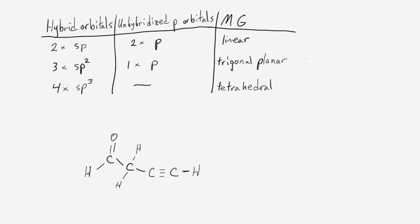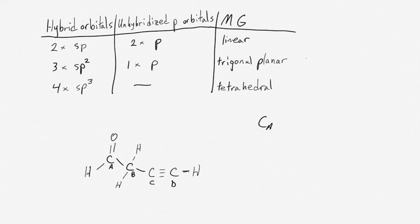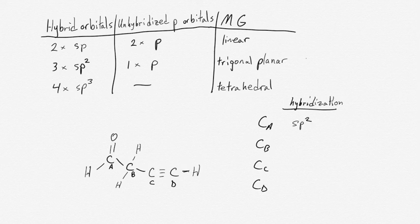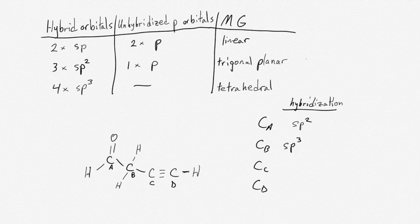We can also work out hybridizations in larger, more complicated molecules using the same method — look at the geometry to determine the hybridization. Carbon A has three bonds around it (two single bonds and a double bond), giving three electron domains, so it is sp2 hybridized. Carbon B has four electron domains and all are bonds, so it is tetrahedrally arranged and sp3 hybridized. Carbon C has only two electron domains, both bonds, so it is sp hybridized. Carbon D also has only two electron domains, both bonds, so it is also sp hybridized.